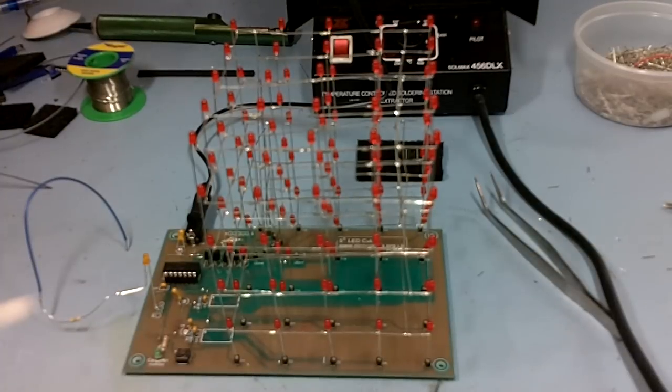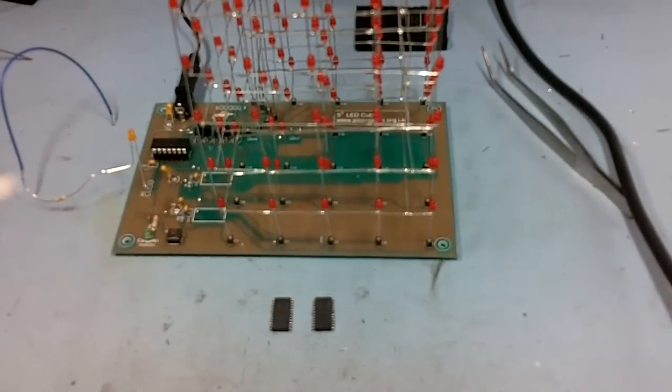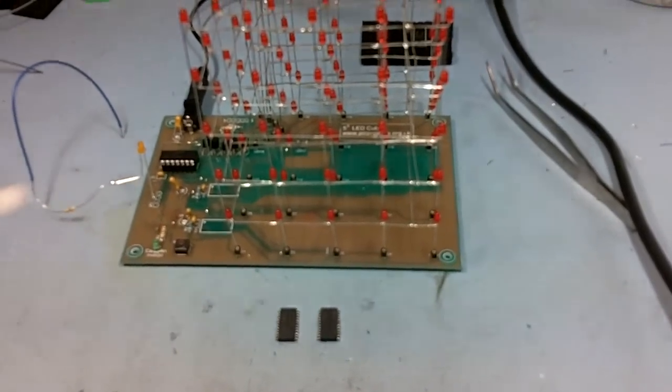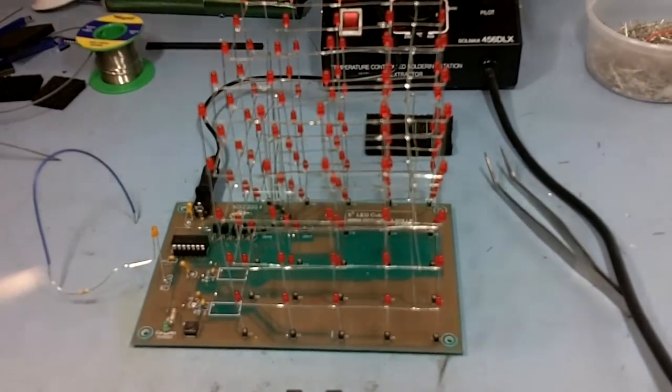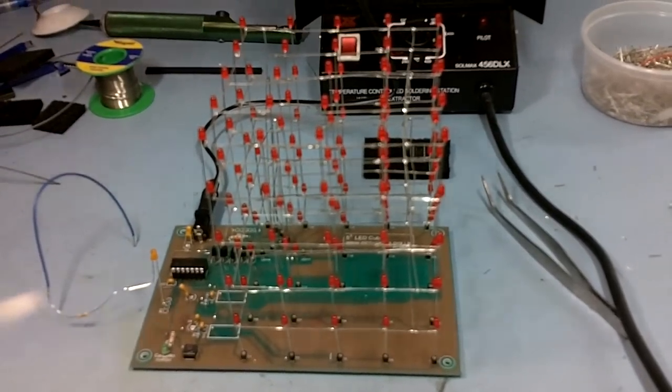This is an LED Cube that came in for repair earlier this week. I had to replace both the driver ICs, which you can see just down there. They've both been blown on some of the outputs, so LEDs in the Cube were permanently on.